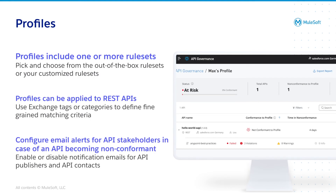So what's included in a profile? First, you define which rule sets should be part of the profile — these rule sets will then be checked against. Second, you define the filtering criteria which will decide to which APIs the governance profile will be applied, using Exchange tags or categories. And the third thing you will configure as part of a profile will be notifications, so that API publishers and API contacts will receive an email alert if their API is non-conformant.